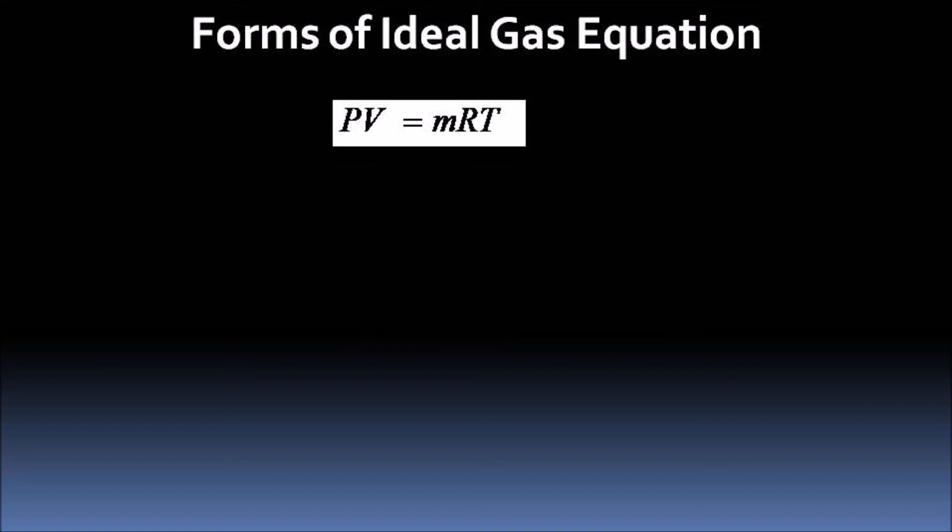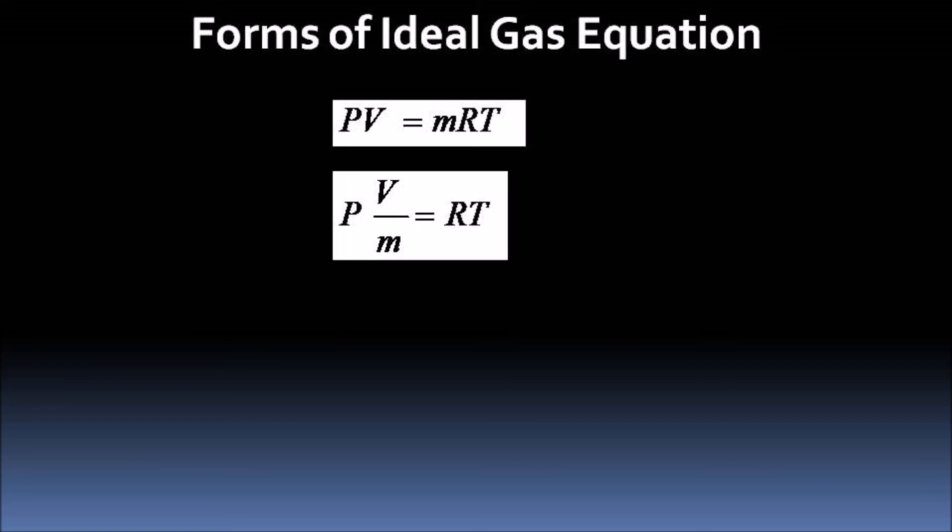We again consider the equation PV = mRT, but this time we transfer the mass of the gas m from the right-hand side to the left-hand side, and get P(V/m) = RT.